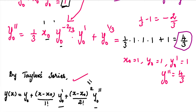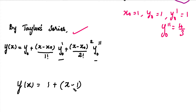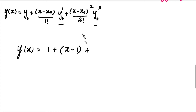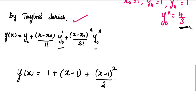Now we substitute all values into the Taylor series formula. So y(x) = y₀ + (x - x₀)/1! · y₀' + (x - x₀)²/2! · y₀''. Substituting: y(x) = 1 + (x - 1)·1 + (x - 1)²/2 · (4/3). This is equation number 1 and gives us the Taylor series approximation.